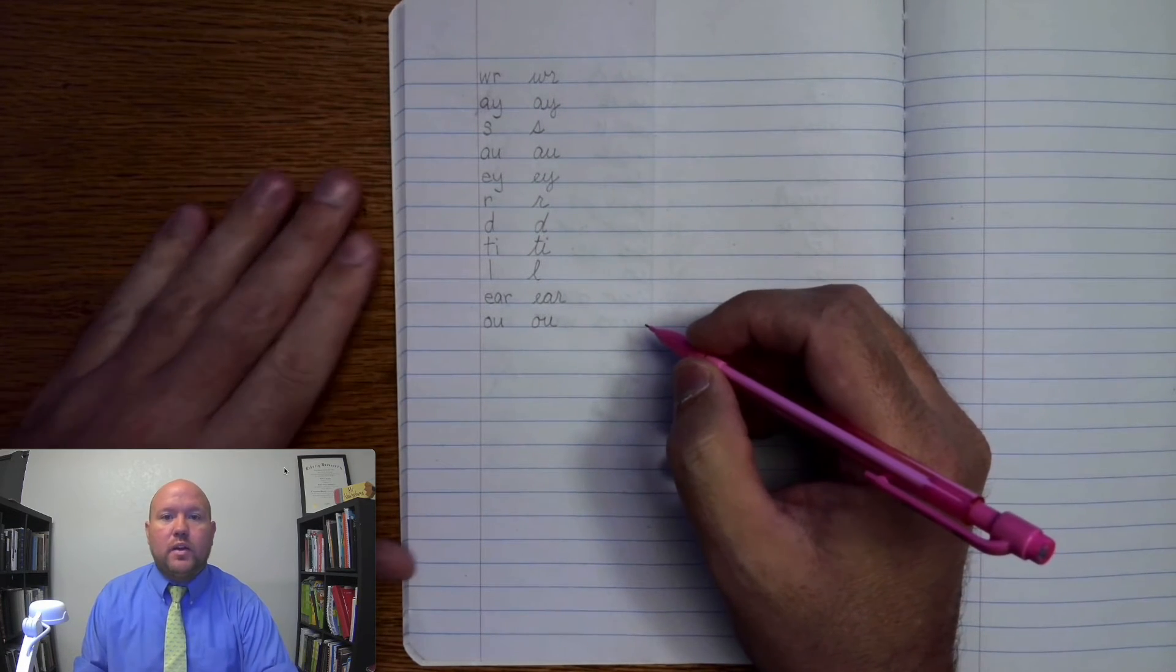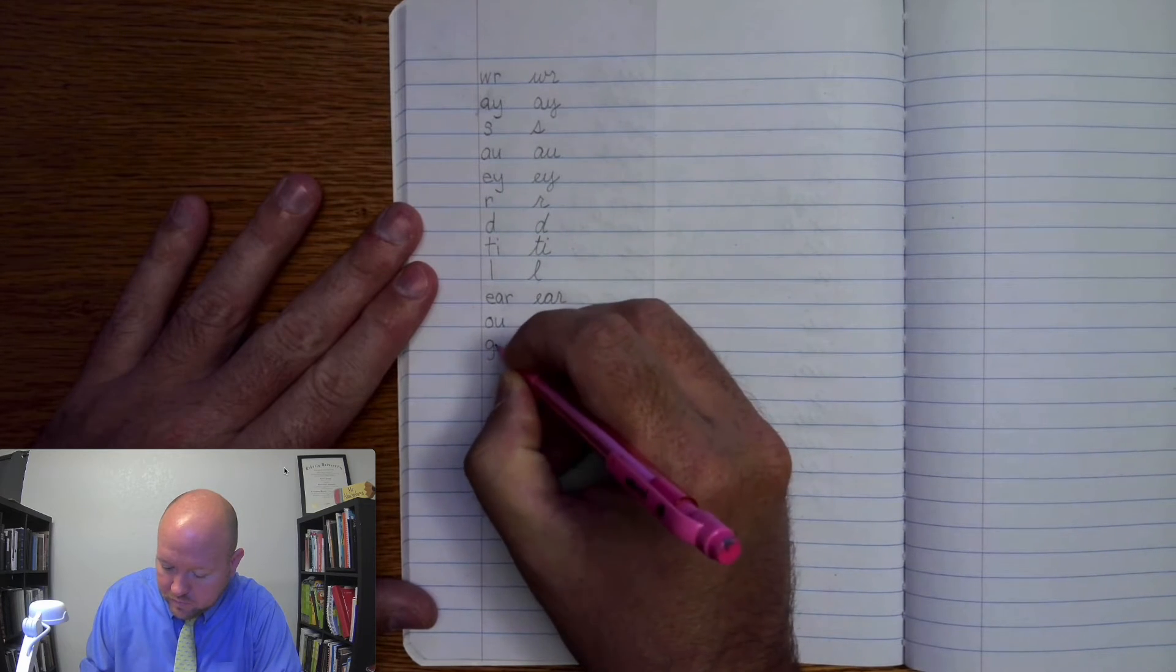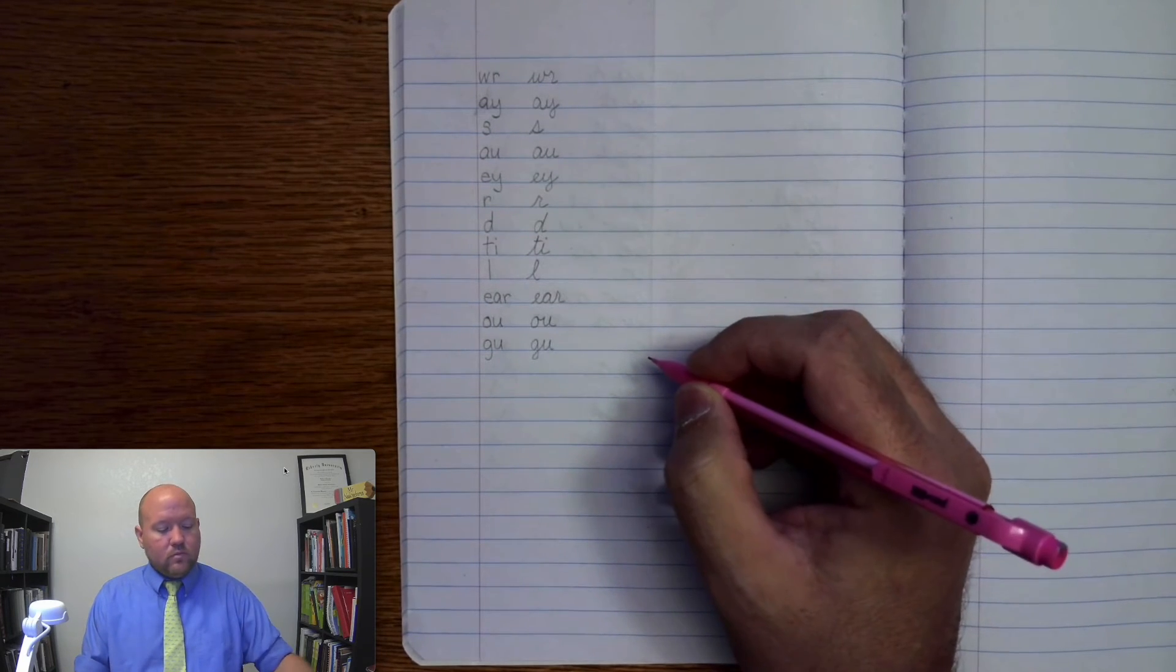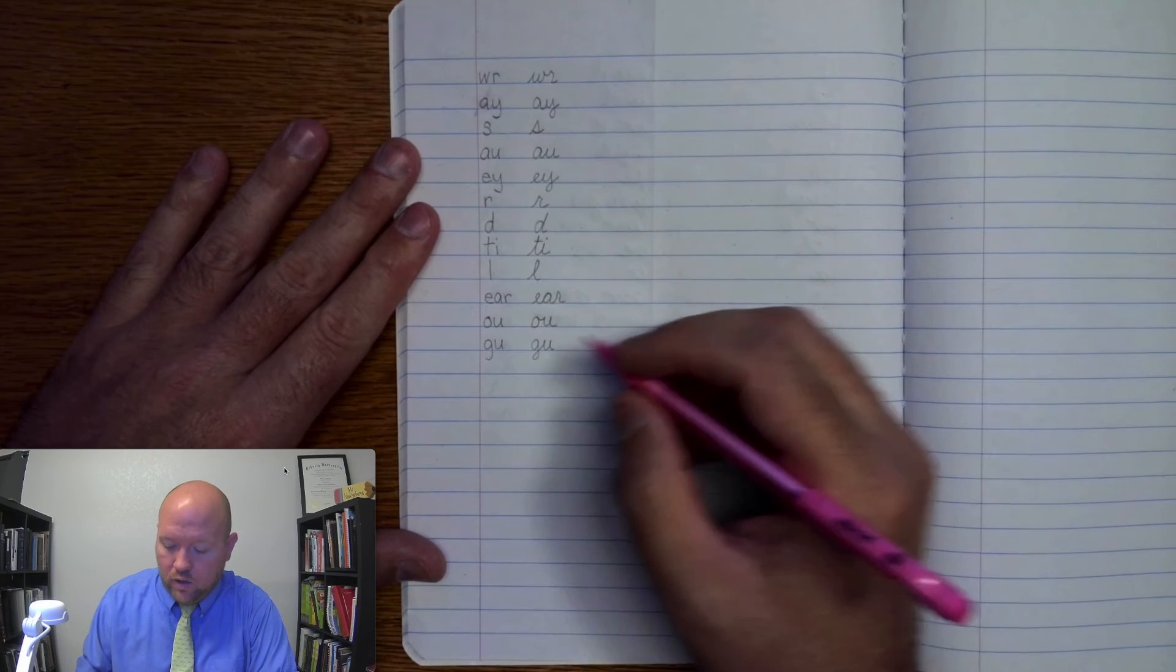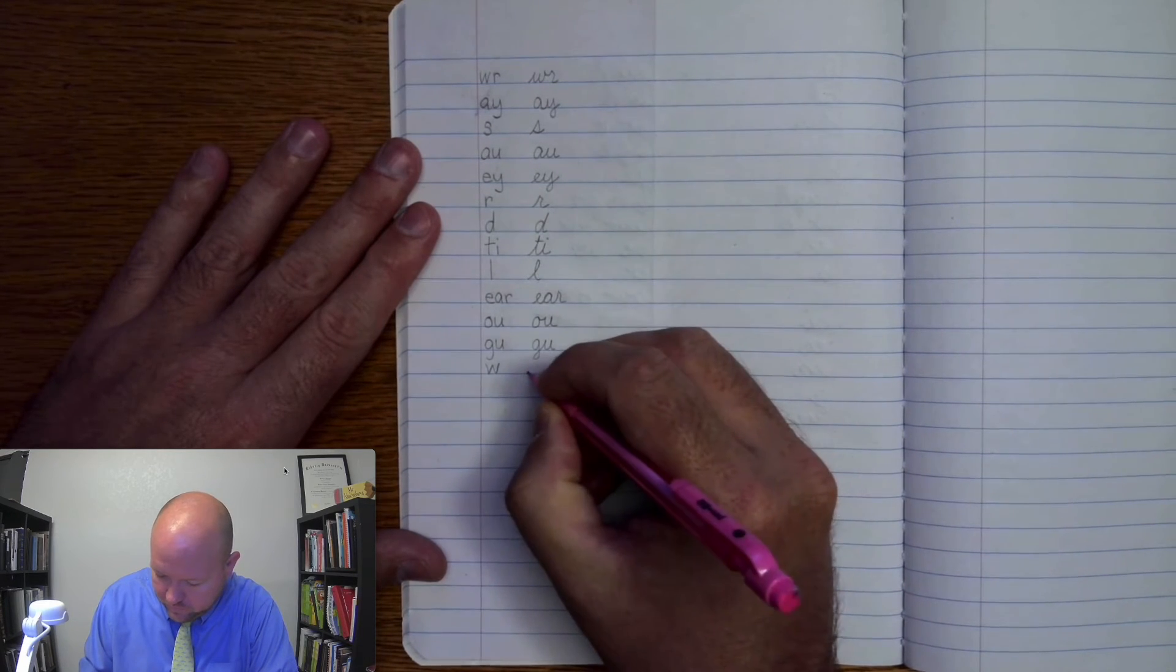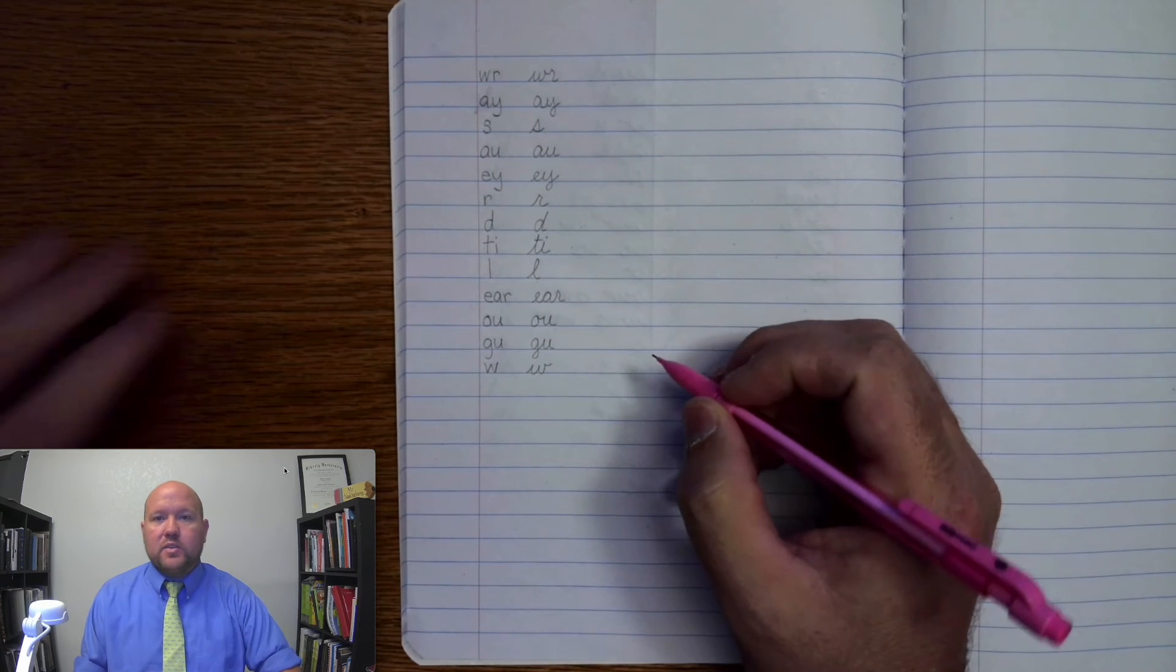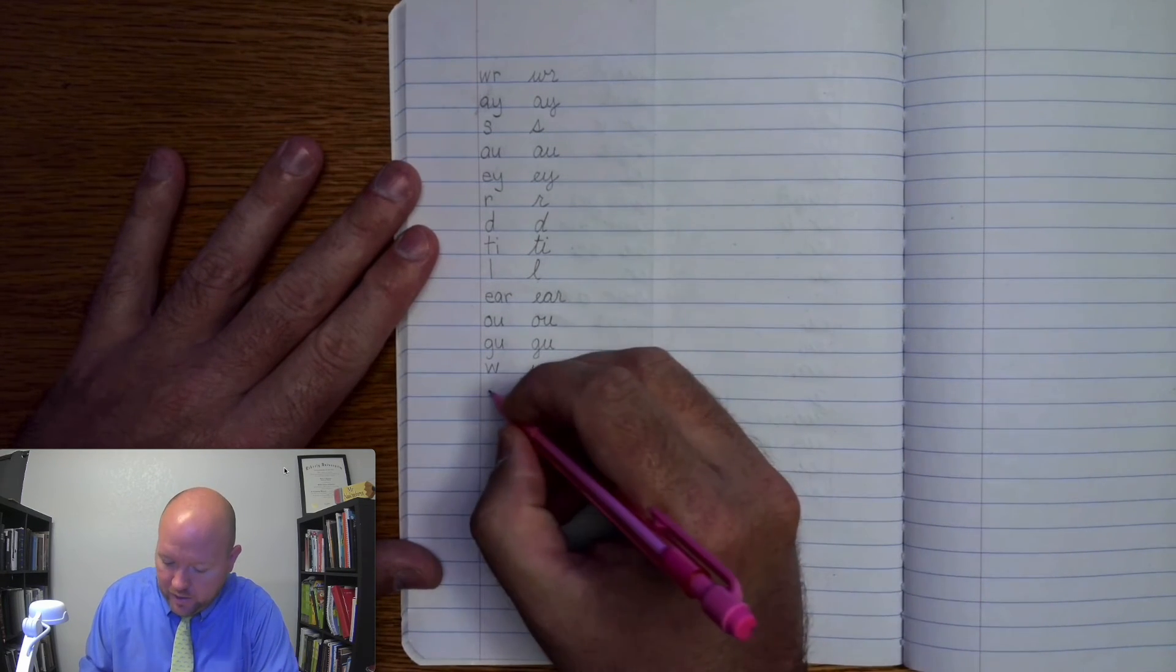Next one, guh, guh. Next one, w, w. Next one, ed, da, t, ed, da, t.